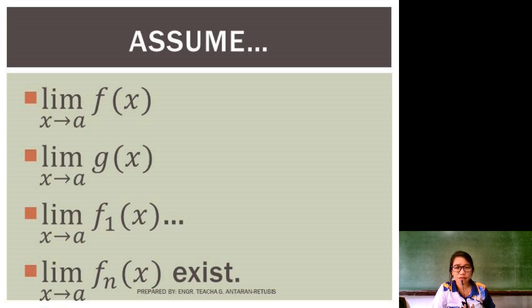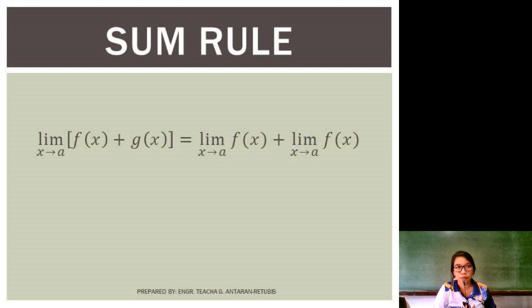So for the first property, we have here the sum rule. Obviously, this is when you add limits. Let's say, for example, you are given f of x and g of x. In order for you to solve for the sum of the limits of the two functions, what will you do? Very simple class. For example, you are asked for the limit of f of x plus g of x as x approaches a. What's the limit?